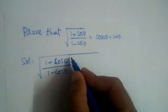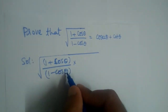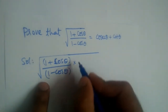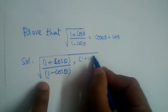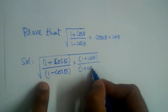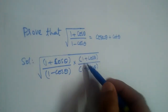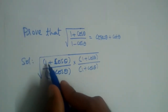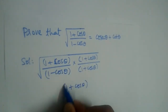What we should do here is rationalize. So the rationalizing factor of 1 minus cos theta will be 1 plus cos theta. We are multiplying numerator and denominator by 1 plus cos theta. So in the numerator we have 1 plus cos theta twice, so it will become 1 plus cos theta squared.